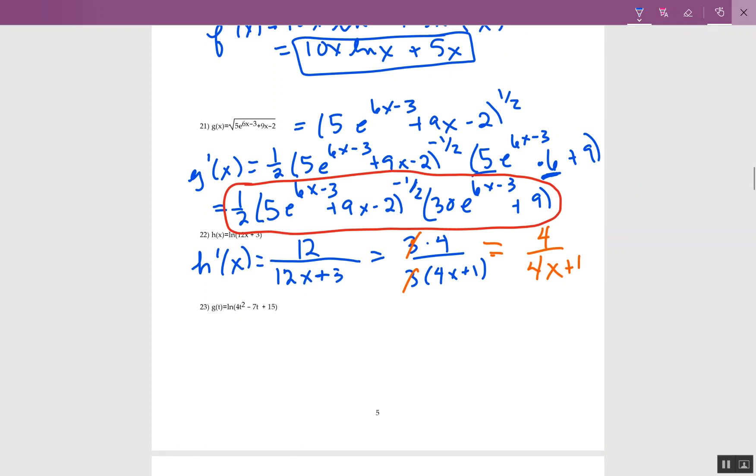Okay, and this one is just another natural log, just a little bit bigger. So when I start it, and it's t because I wrote t, so let's put a t here. Again, looking at the log says make it a fraction. Whatever's in the parentheses, that is going on the bottom. So 4t squared minus 7t plus 15.